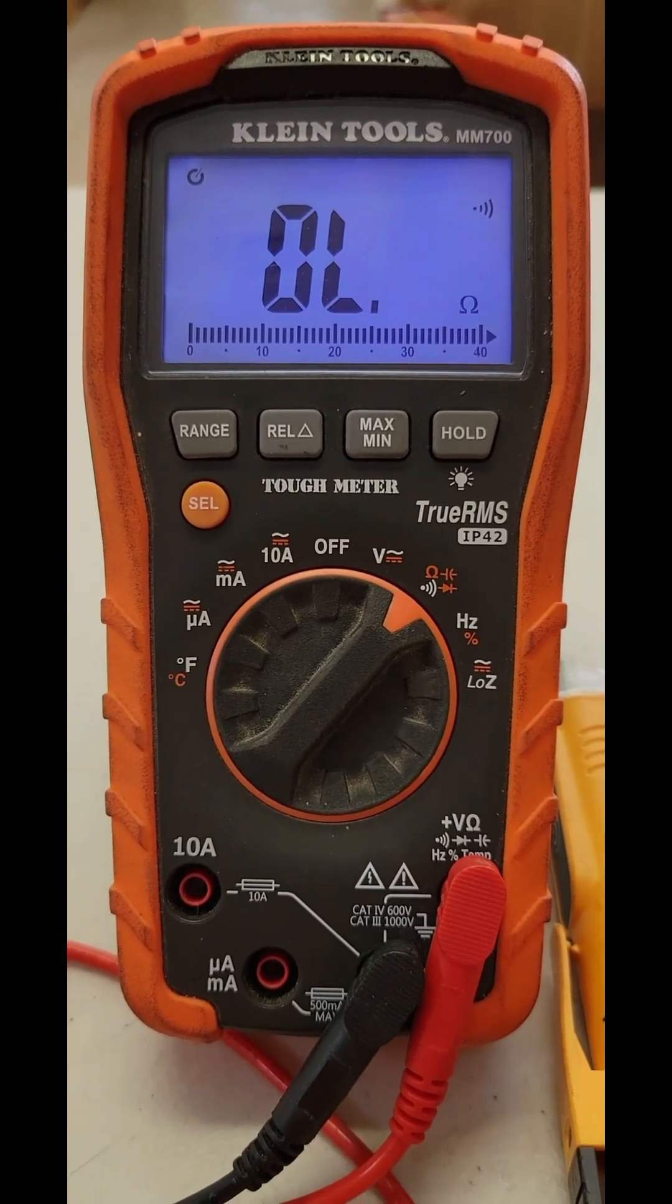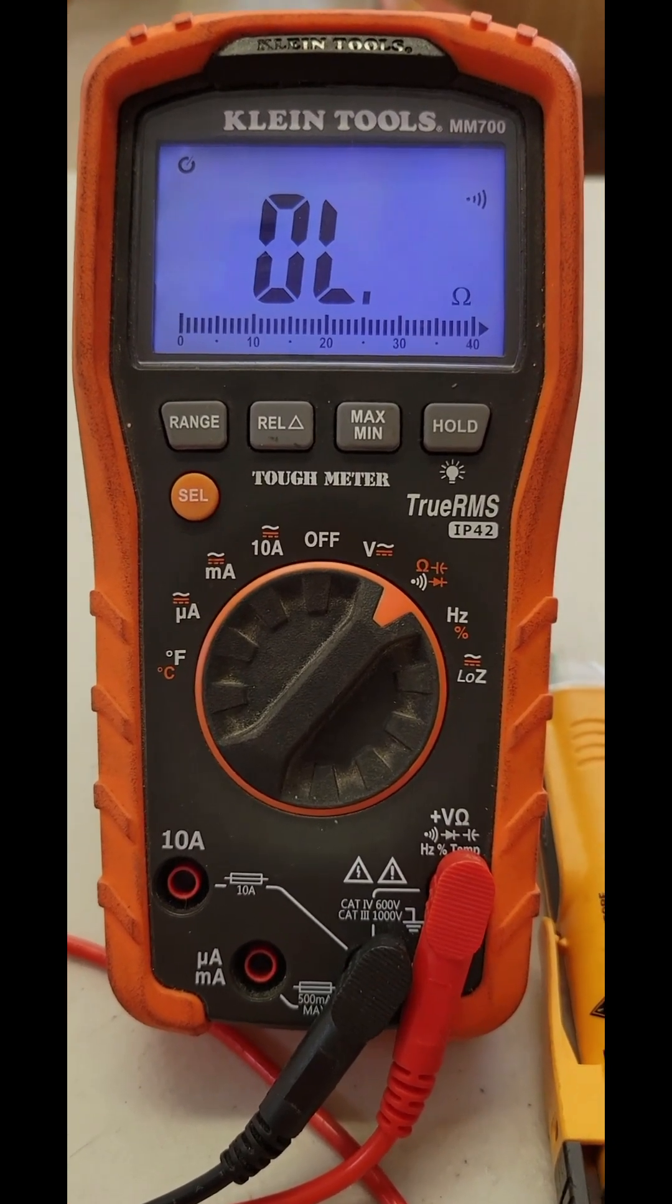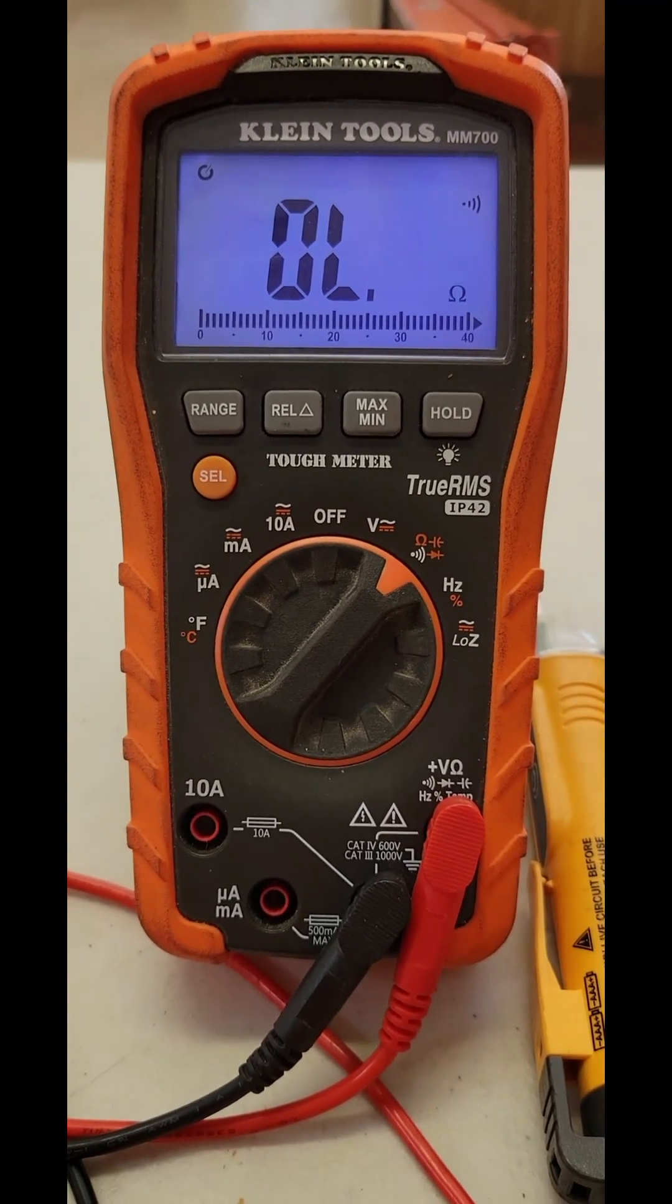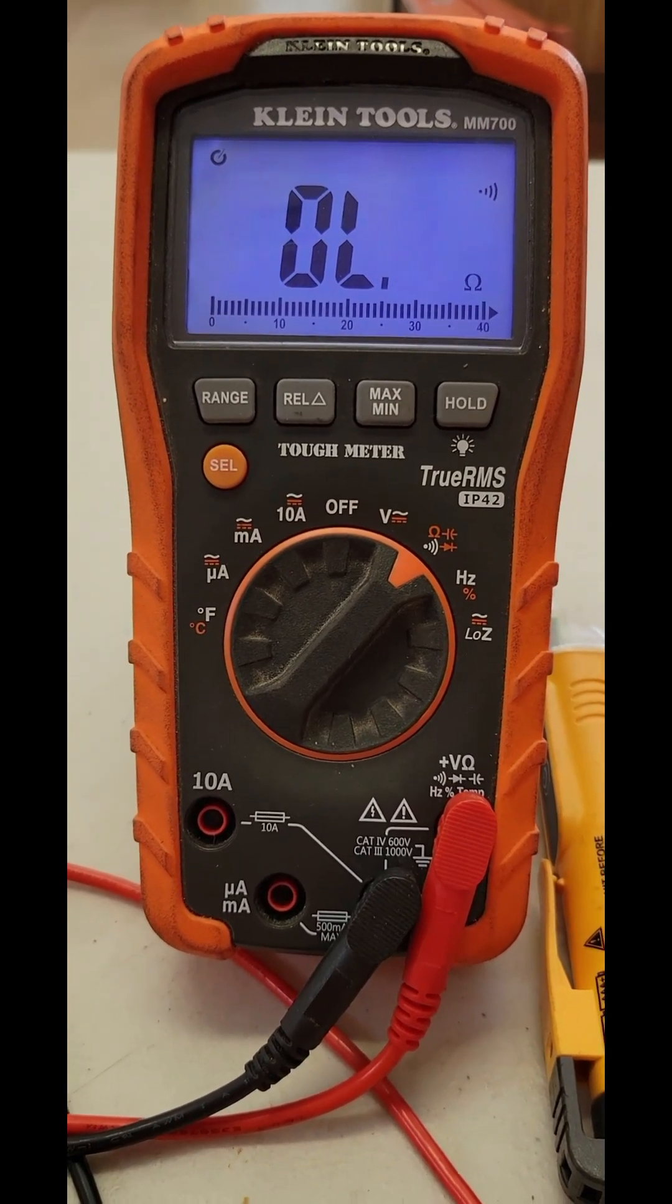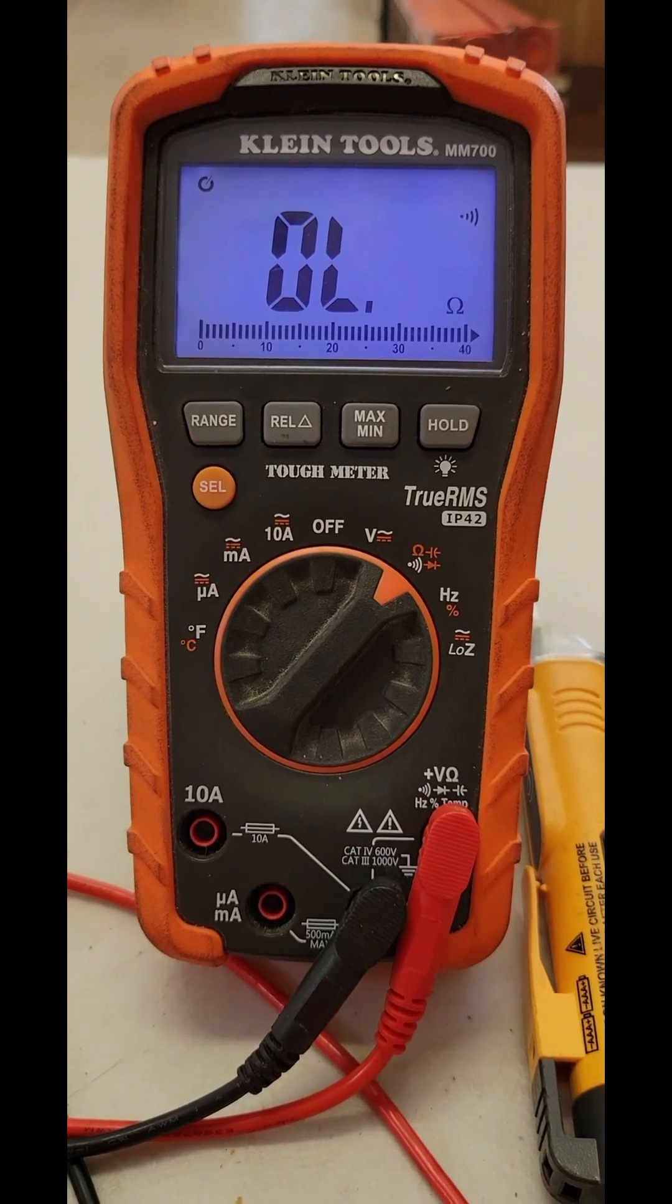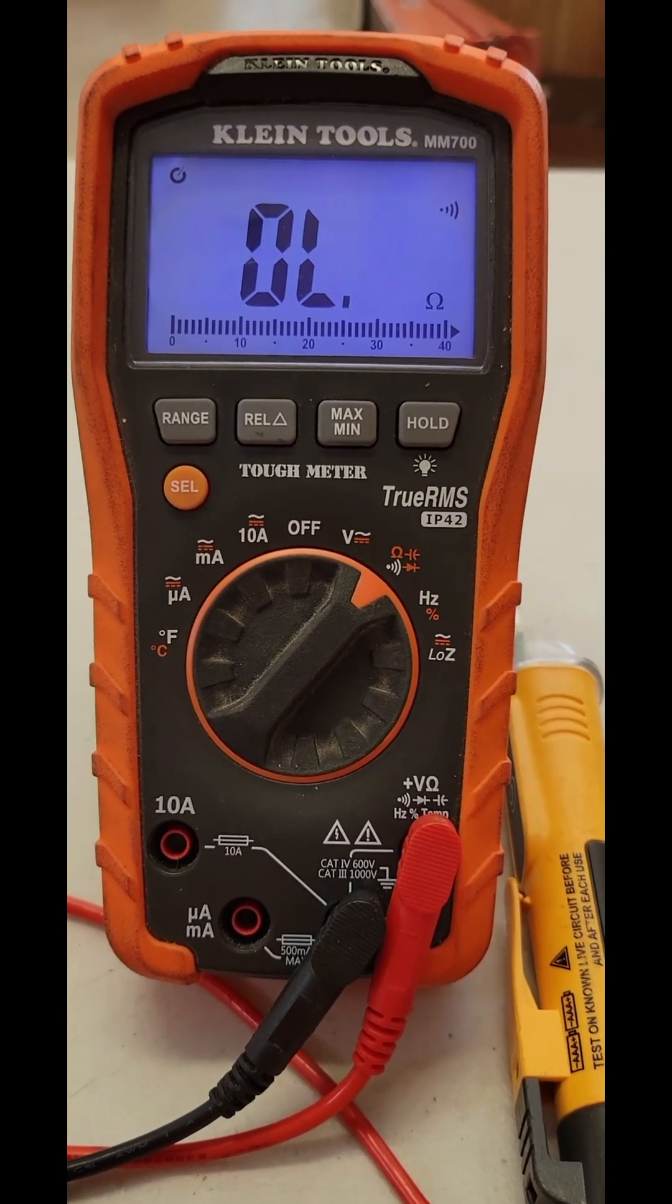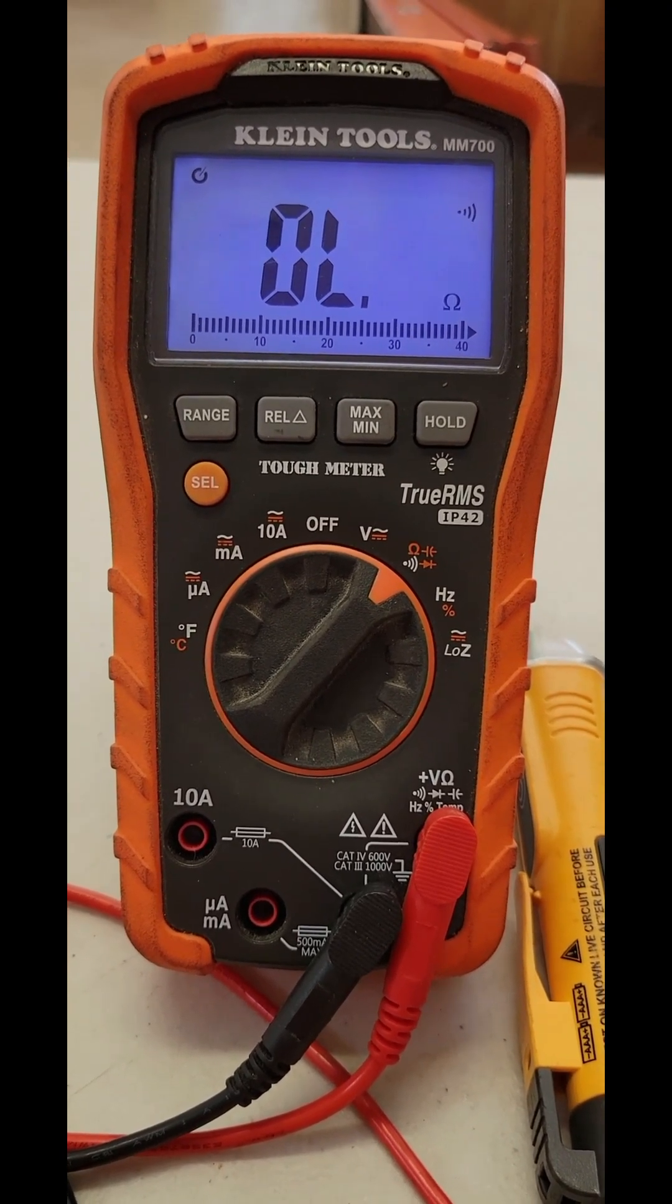Now this is good for checking extension cords, power cords, anything that you suspect might have a short in it. However, this test you do not want to do on a live circuit because it could result in an explosion. Your multimeter during this test is going to send out a voltage through the wire or device that you're testing, and it reads what comes back on the black lead and uses a preset calculation to show you the value on the screen. So since this sends out voltage, you don't want any incoming voltage because they will bump heads together and cause an explosion.